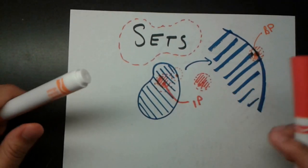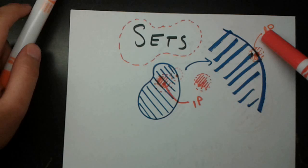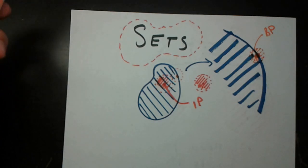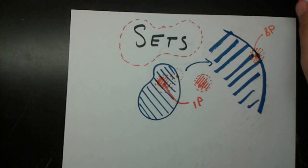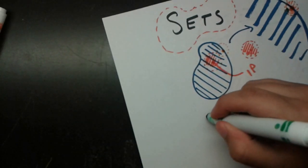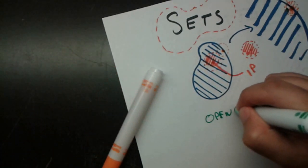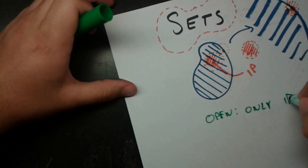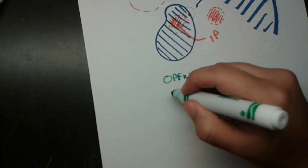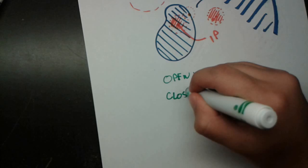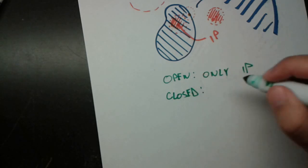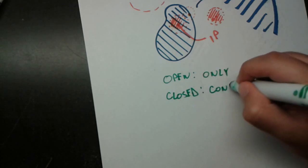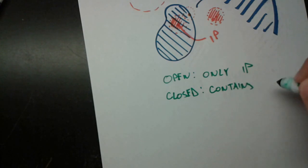So now that we have definitions for interior points and boundary points, we can make definitions for open and closed sets. So an open set is simply defined as a set that contains only interior points. A closed set is a set that contains all of its boundary.